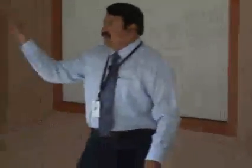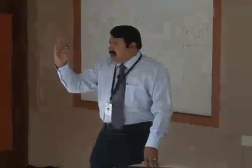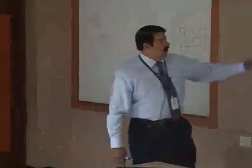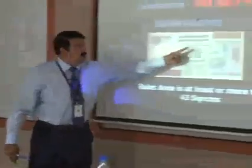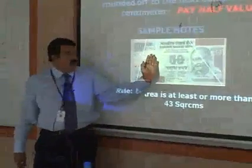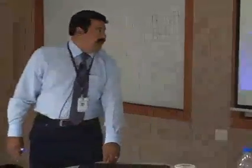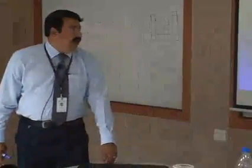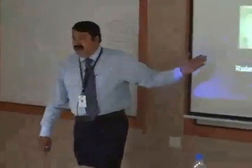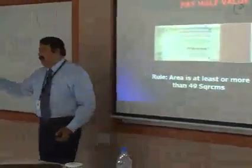Then coming to half value. The rule for half value is more than 40% but less than 65%. If the area is more than 40% and less than 65%, half value is given. So here you see — both numbers are not there — still you get ₹25 rupees because this piece is more than 40% and less than 65%. Similarly for ₹100: this portion is more than 40% and less than 65%, so half value.